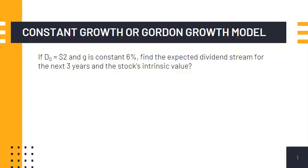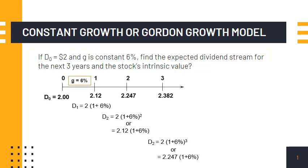Welcome back everyone. In the previous video we already solved for the required rate of return of 13 percent and growth rate of 6 percent. In this problem, the stock's recent dividend or D-sub-zero is two dollars. Observe that the dividends grow by 6 percent every year. The price today, depicted as P-hat-sub-zero, is computed using the constant growth formula as D-sub-1 ($2.12) over the difference between the required rate of return 13 percent and growth rate 6 percent.